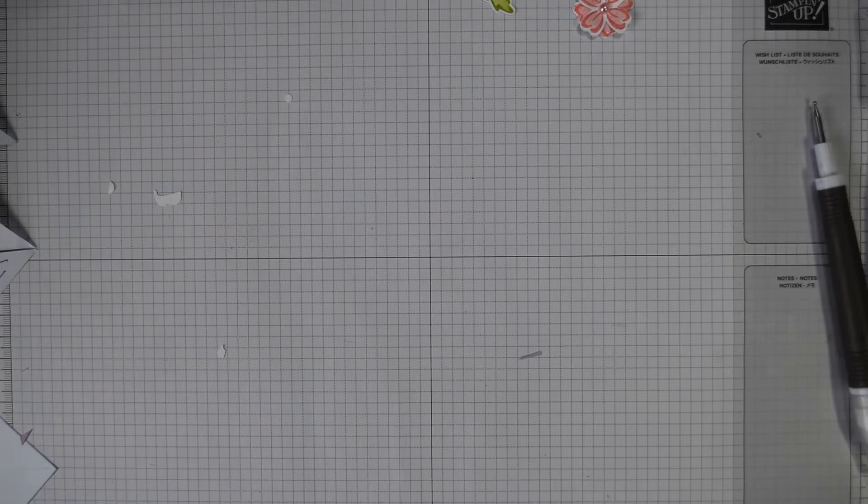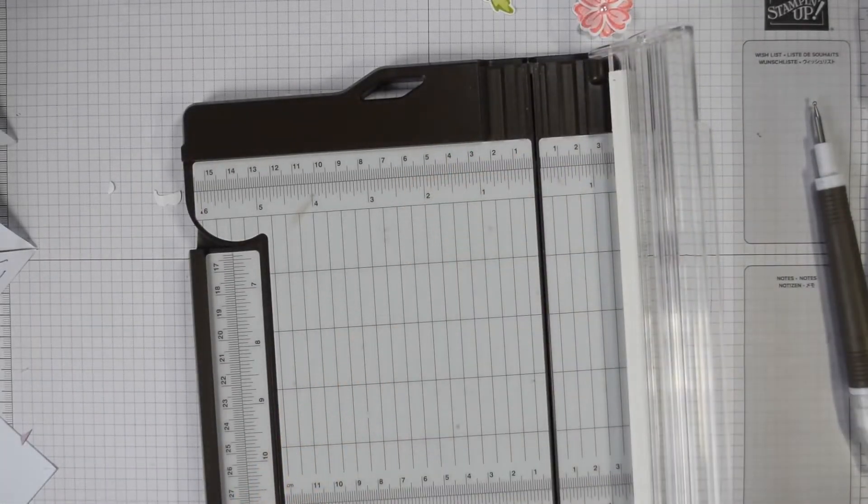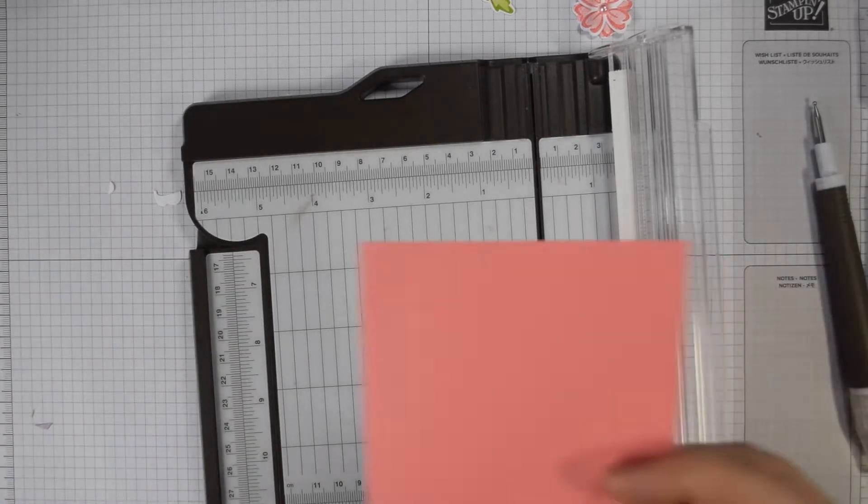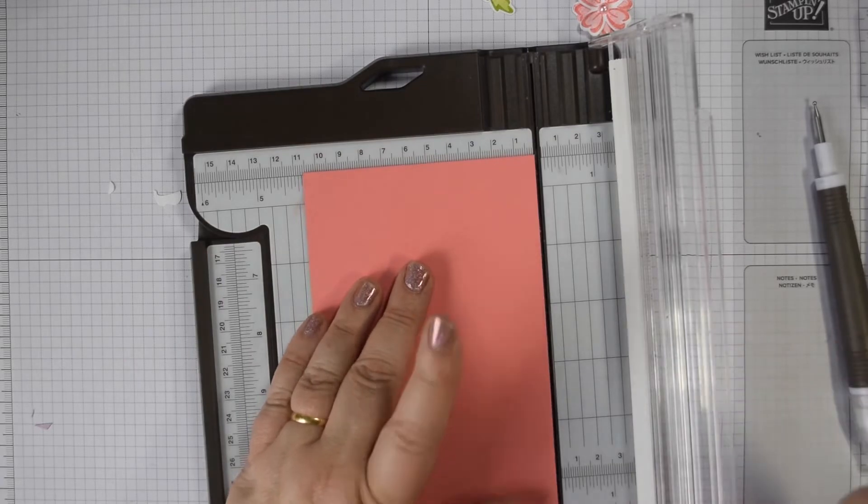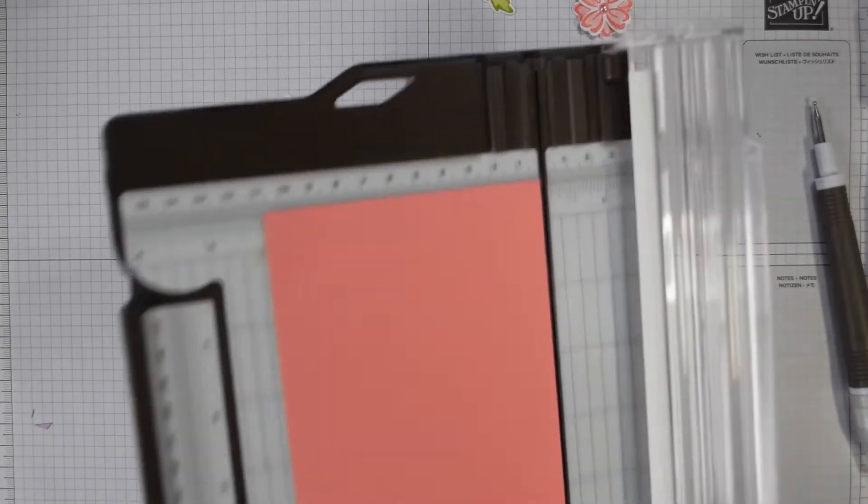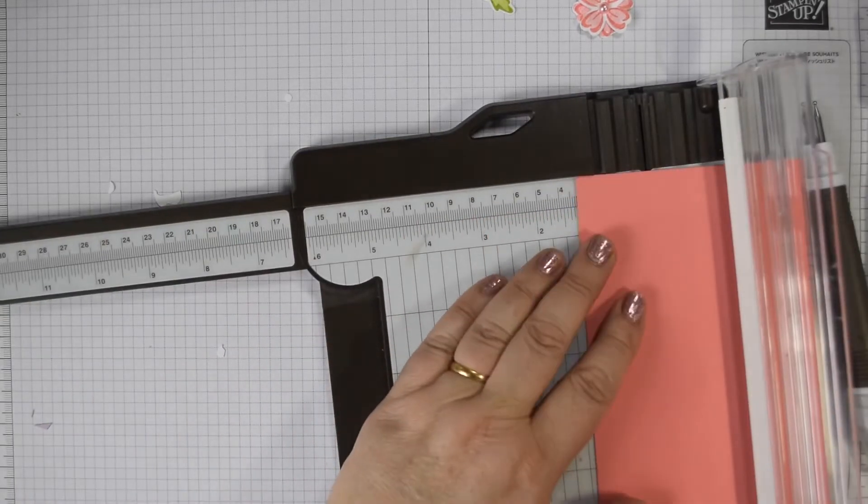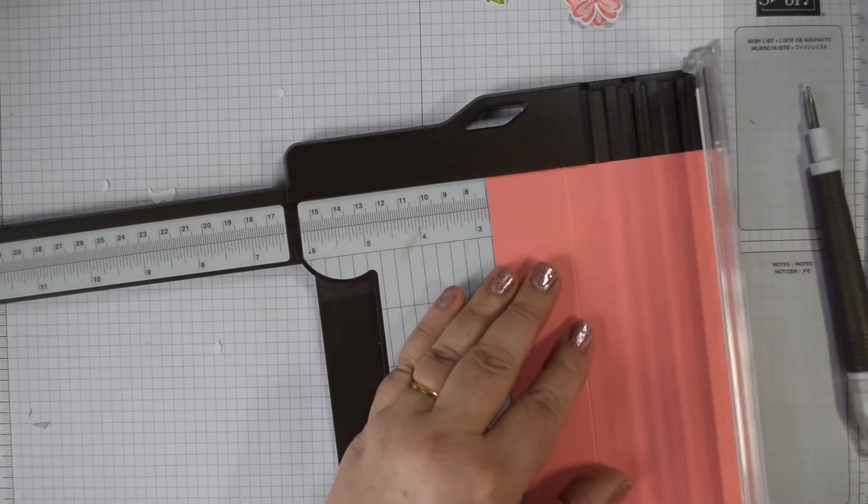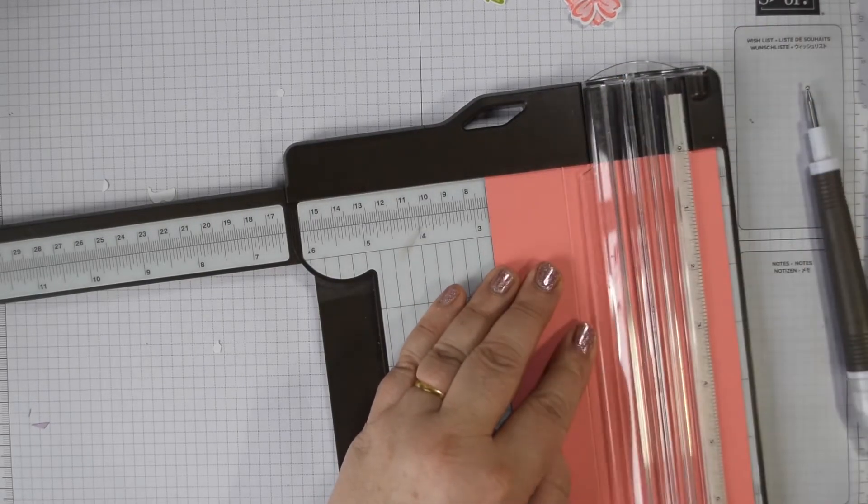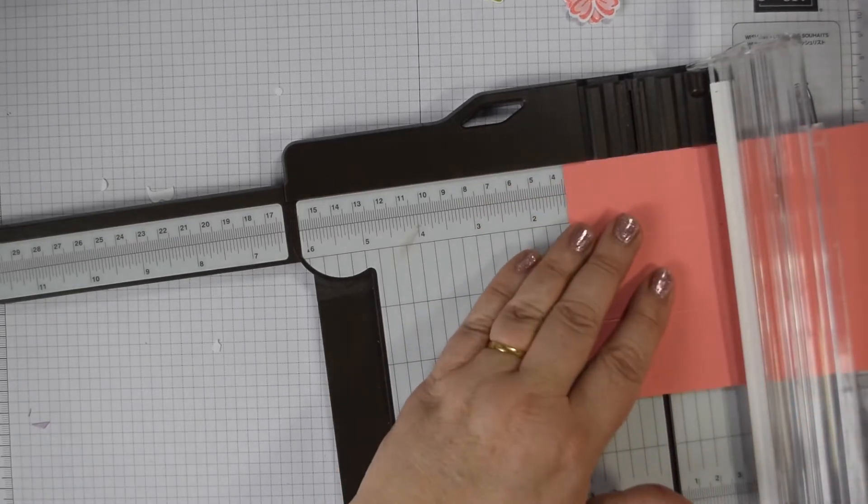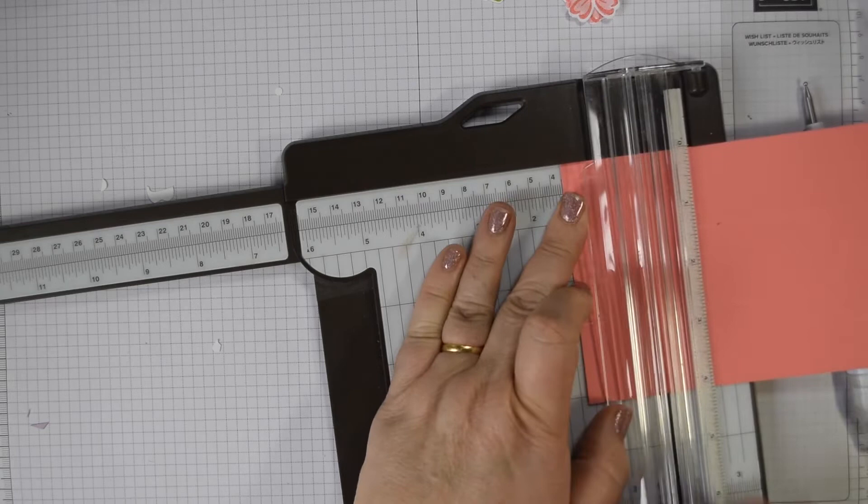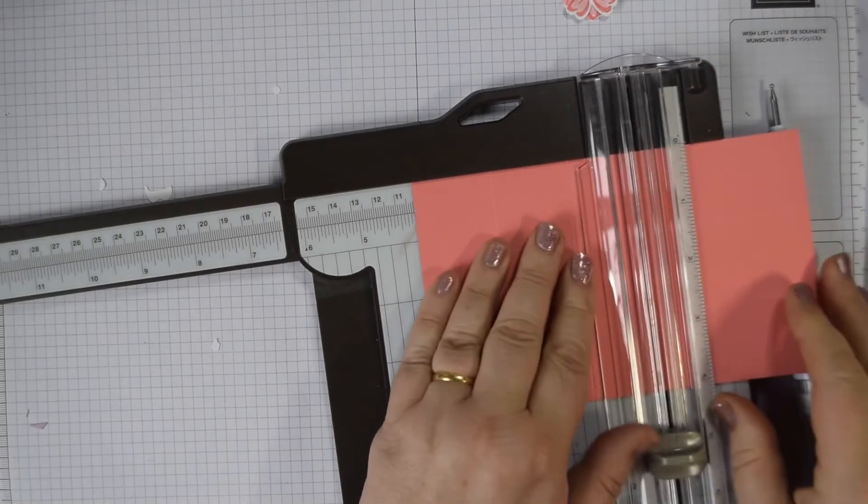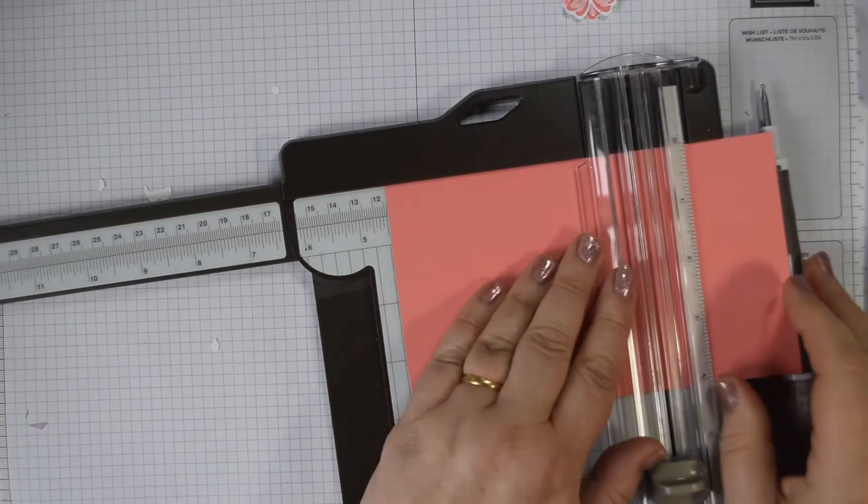But what you do want now is to do some scoring. You need a piece of cardstock really small. It's 10 1/2 by 17 1/2 centimetres. So that's 4 1/8 by 6 7/8. And the scoring is super easy. You're going to score on the short edge at 3 1/2 and at 7, which is 1 3/8 by 2 3/4.